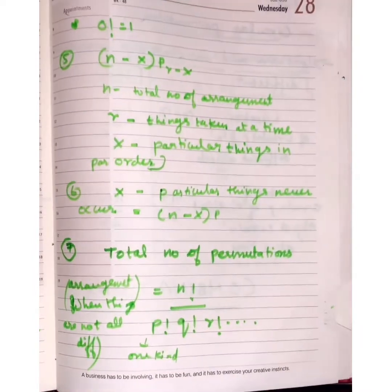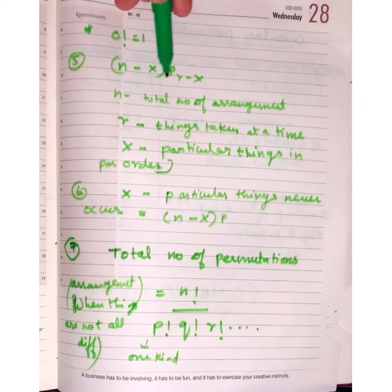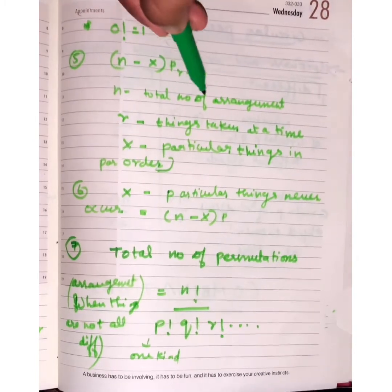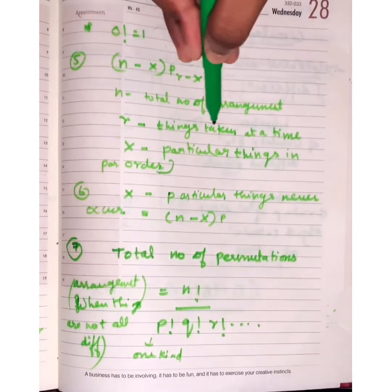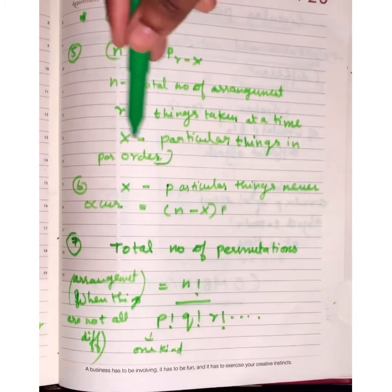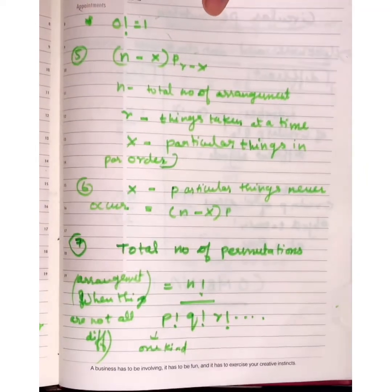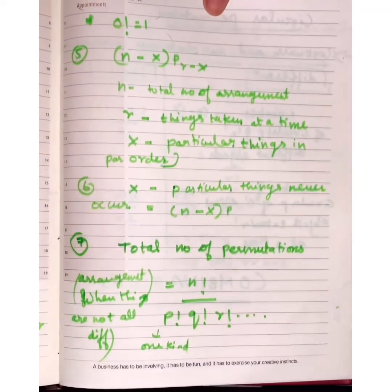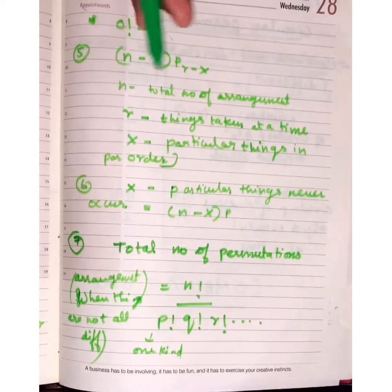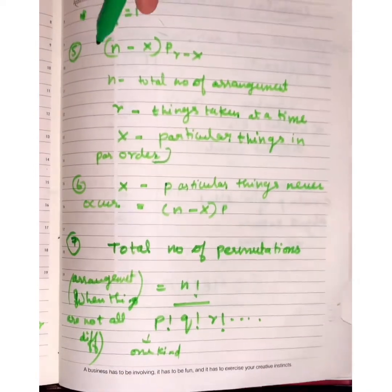You must know that 0! = 1. When x particular things must appear in a particular order, the formula is (n−x)P(r−x), where n is the total number of items, r is the number of items taken at a time, and x is the number of particular items in a particular order.